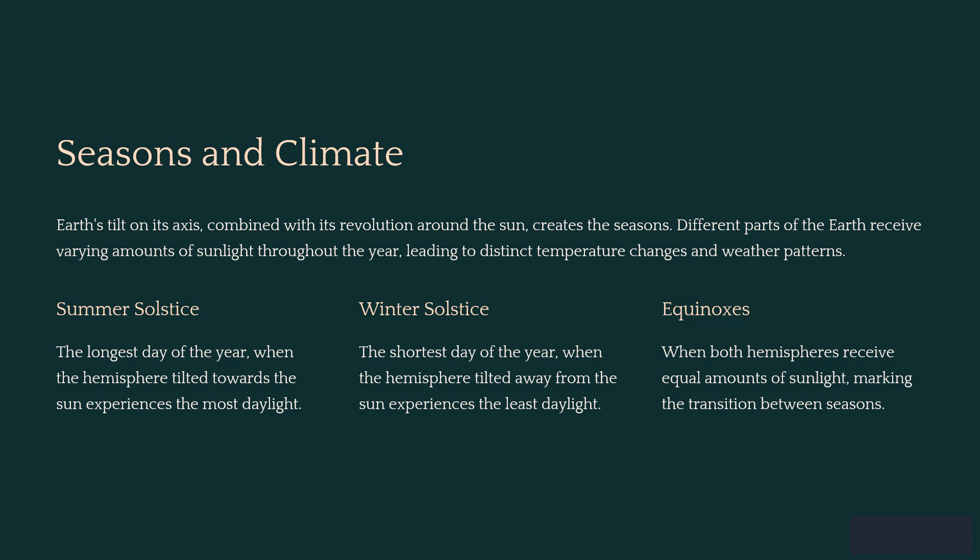Earth's tilt, combined with its revolution around the sun, leads to the seasons, as different parts of the Earth receive varying amounts of sunlight. We experience temperature changes and weather patterns. This also explains the summer solstice — the longest day — the winter solstice — the shortest day — and the equinoxes, when both hemispheres receive equal sunlight.